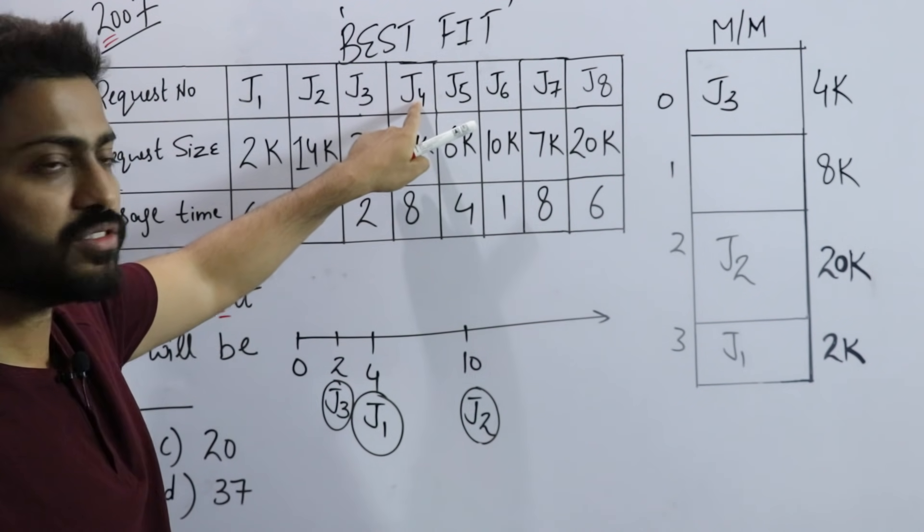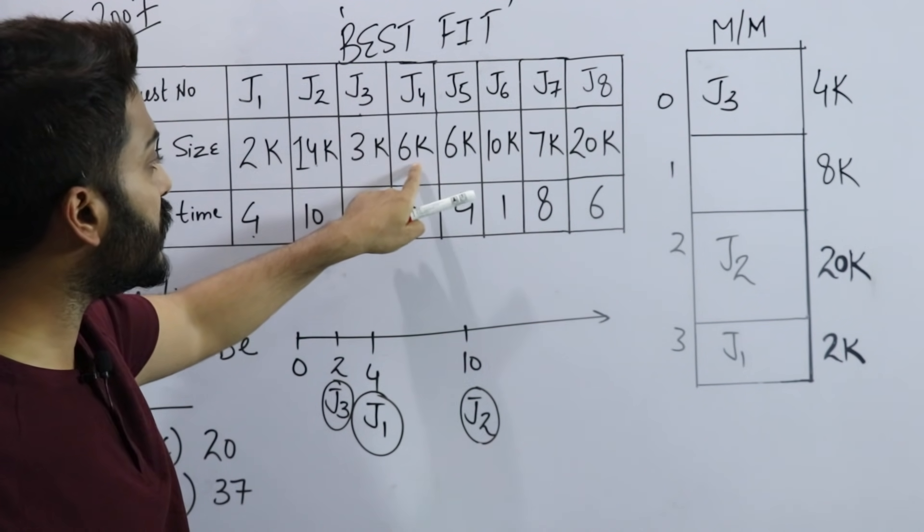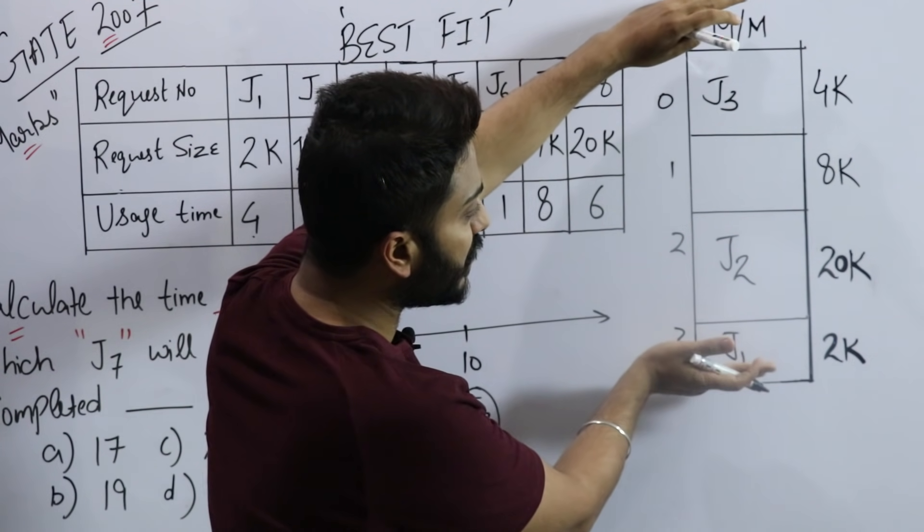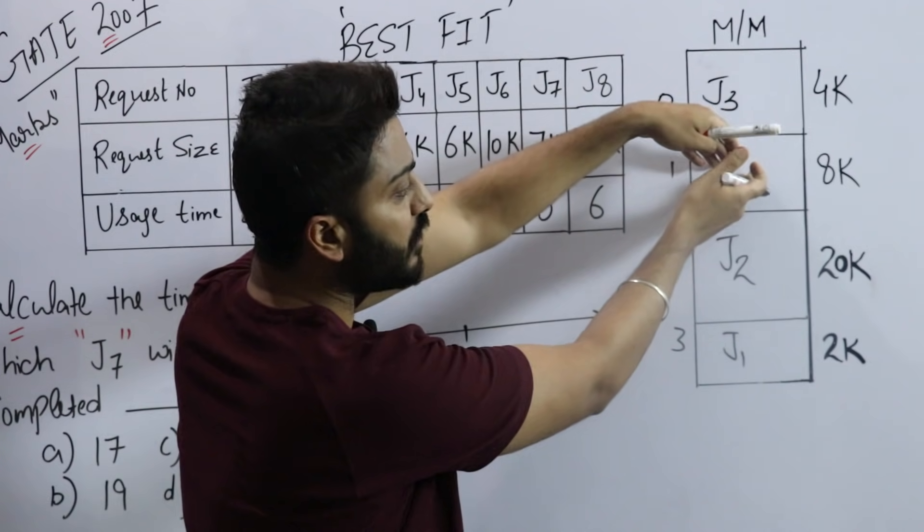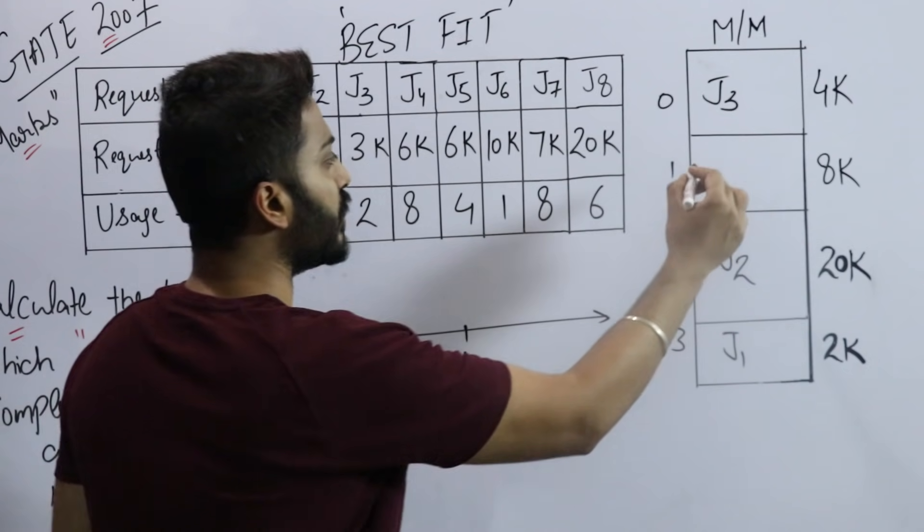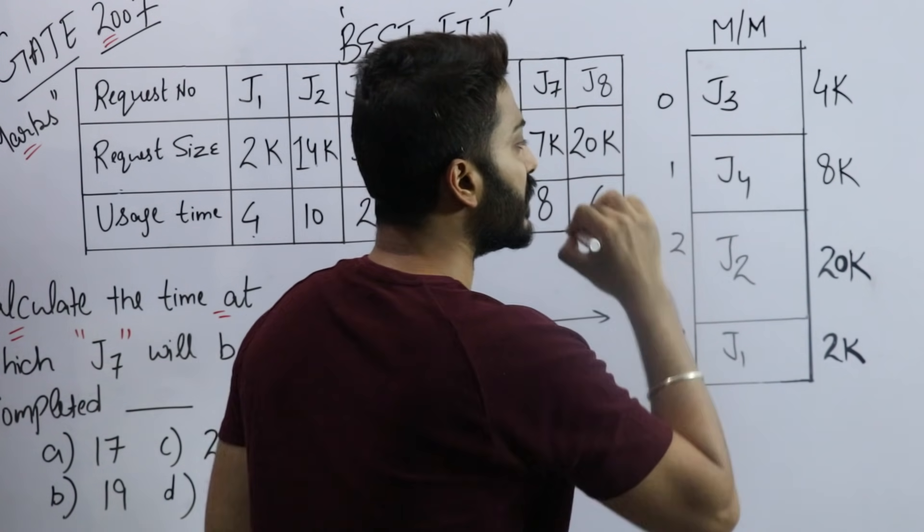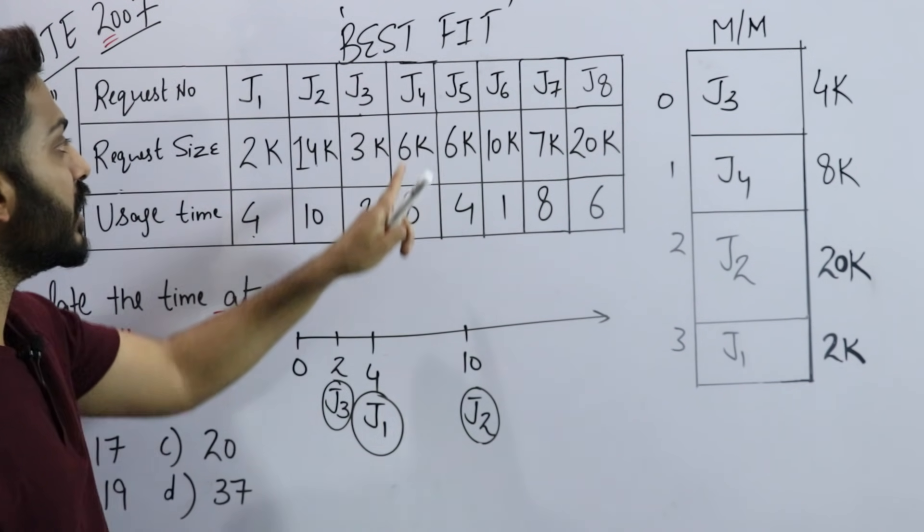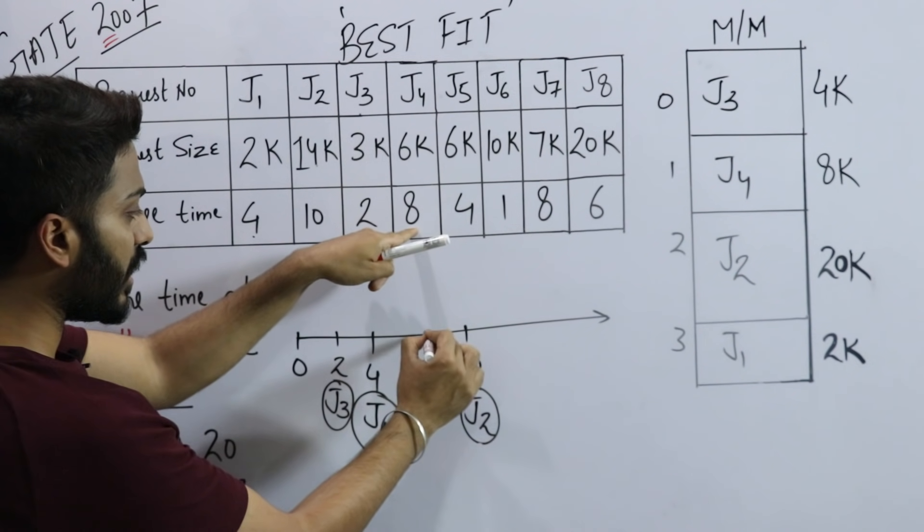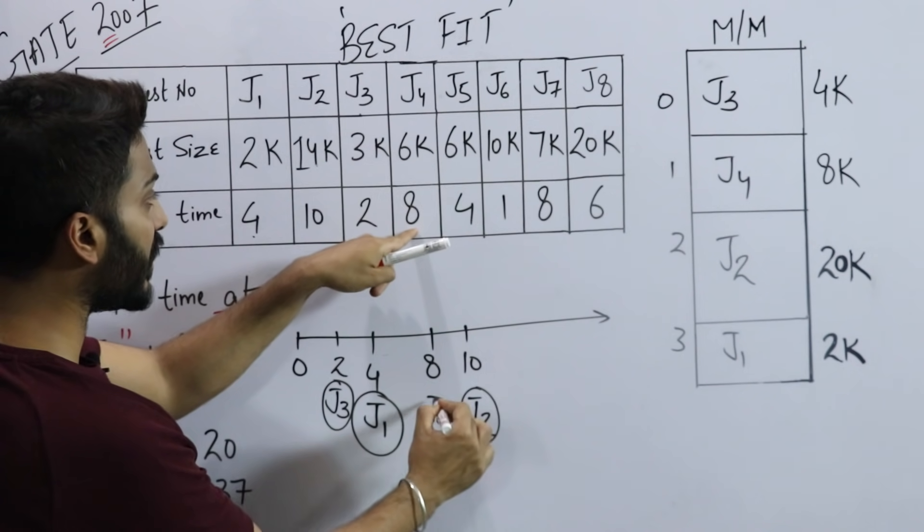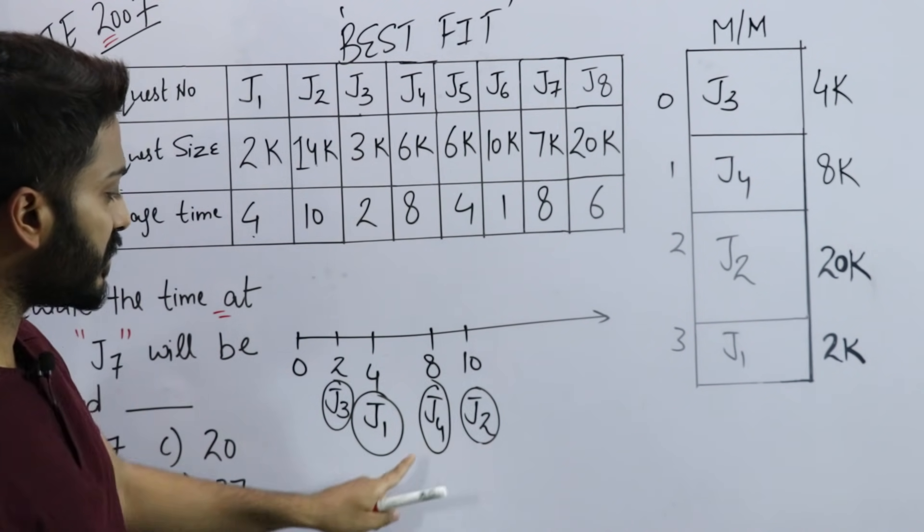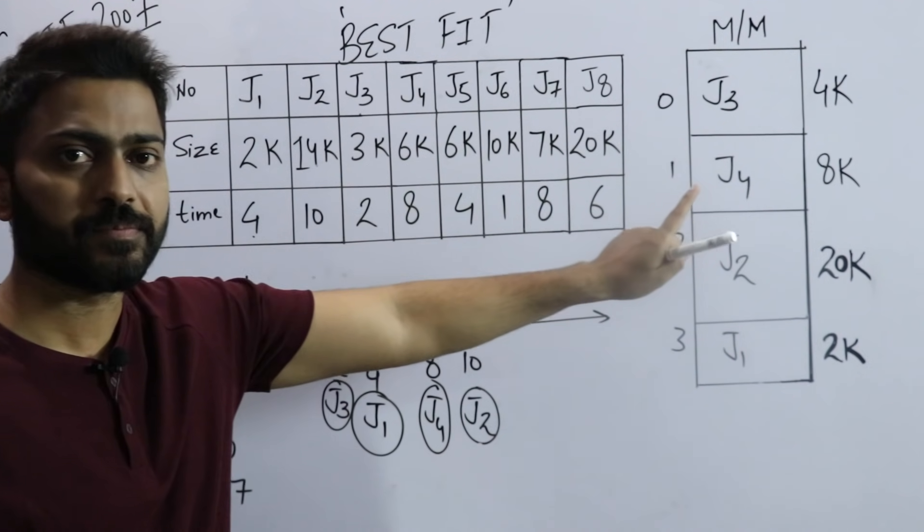Next is J4. J4 also came at time 0. J4 needs 6k memory. At this time, how many slots are available? Only 1 slot is available. Obviously I can only place J4 in this slot. The time needed is 8, meaning it will stay until time 8. When time reaches 8, it will complete its work and exit.